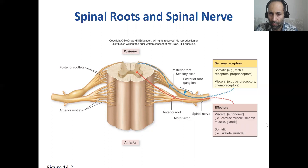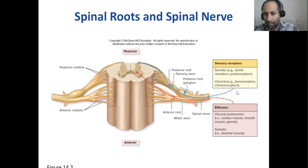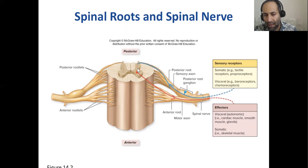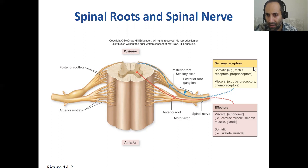This is the sensory input from here into the spinal cord, and this is the motor output from the spinal cord back to the rest of the body. In between the sensory and motor neurons are the interneurons, which mediate between the posterior and the anterior rootlets. Examples of what the posterior root brings in include tactile receptors for touch, proprioceptors for joint position, visceral stretch, and chemoreceptors.